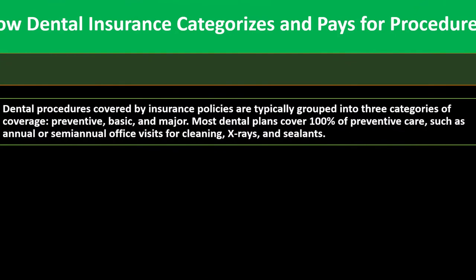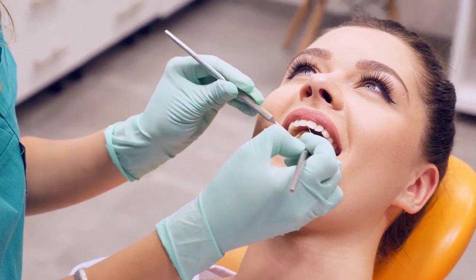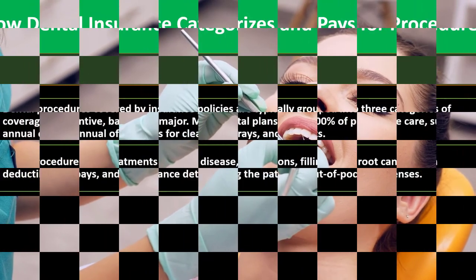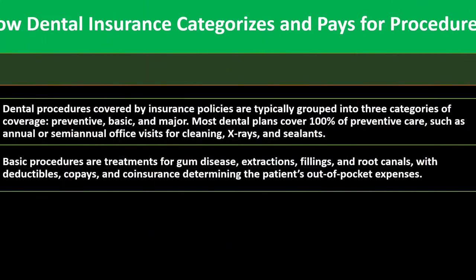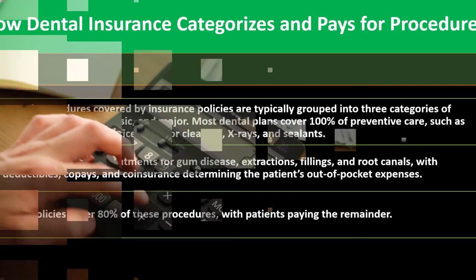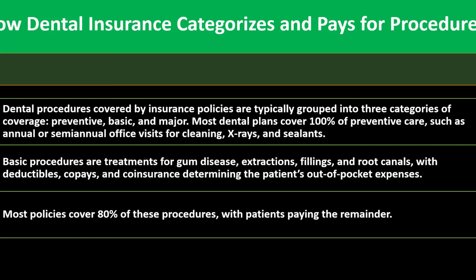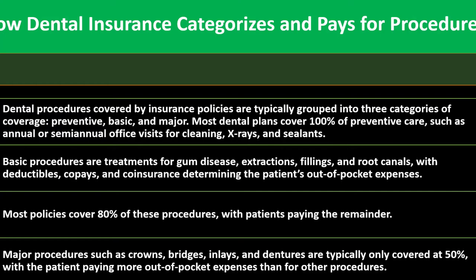Most dental plans cover 100% of preventative care, such as annual or semi-annual office visits for cleaning, x-rays, and sealants. Basic procedures are treatments for gum disease, extractions, fillings, and root canals — with deductibles, co-pays, and co-insurance determining the patient's out-of-pocket expenses. Most policies cover 80% of these basic procedures, with patients paying the remainder. Major procedures such as crowns, bridges, inlays, and dentures are typically only covered at 50%, with the patient paying more out-of-pocket than for other procedure types.